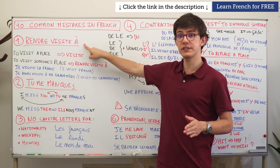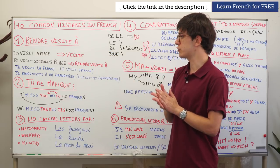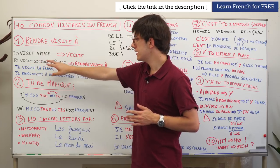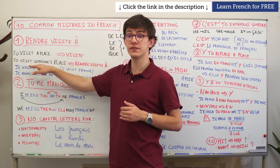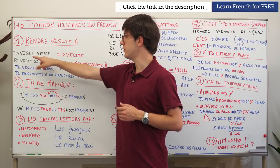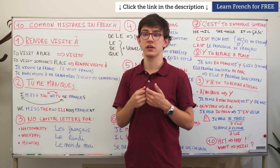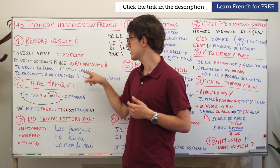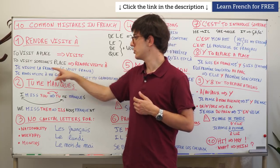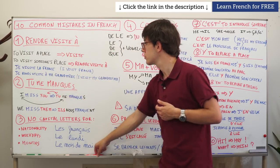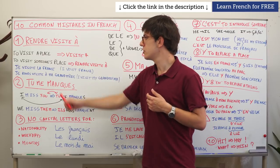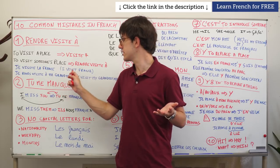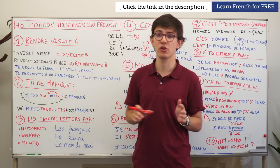First of all, this concerns the translation of the English verb 'to visit.' There are two ways to translate 'to visit' in French. When you visit a place — like 'I visit France' — you use the verb visiter. Je visite la France. This is easy, it's not a false friend.